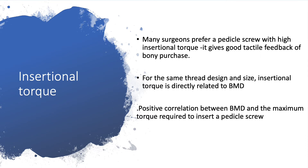Now let's analyze how insertional torque affects the biomechanics of a pedicle screw. Many surgeons prefer a pedicle screw with high insertional torque, as it gives good tactile feedback of bony purchase during insertion. For the same thread design and size, insertional torque is directly related to bone mineral density. There is a positive correlation between bone mineral density and the maximum torque required to insert a pedicle screw — better quality bone gives much better feedback compared to osteoporotic bone.